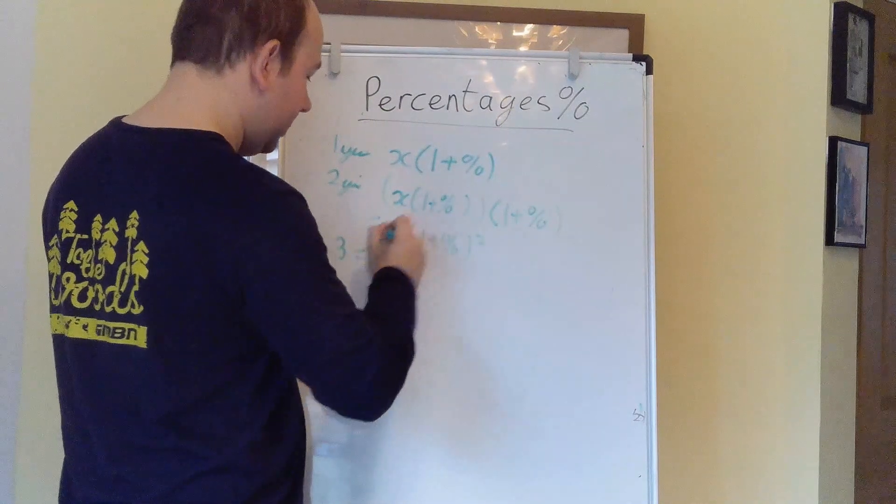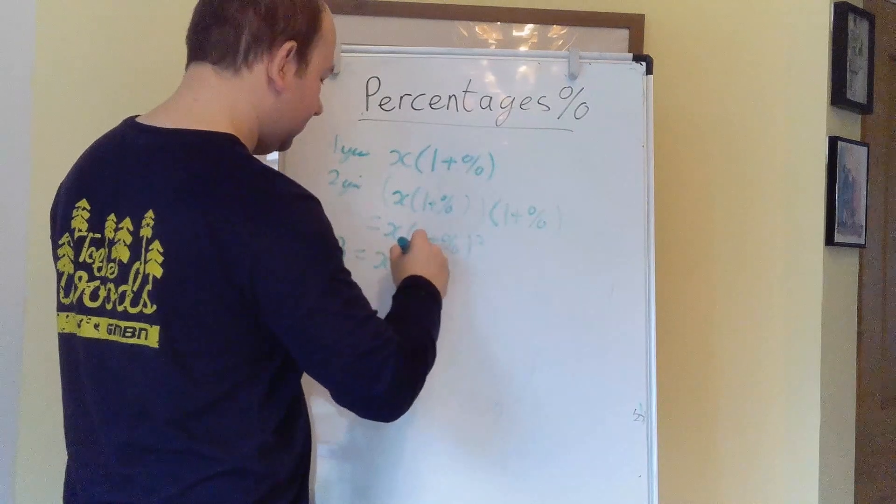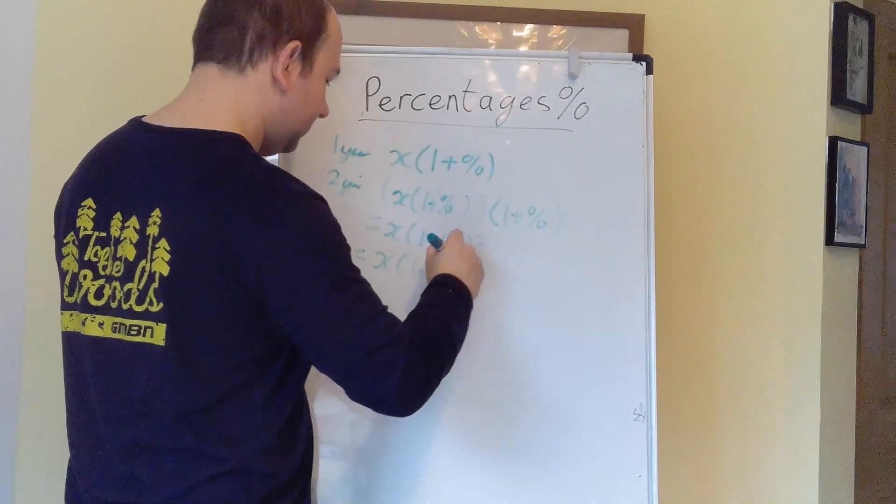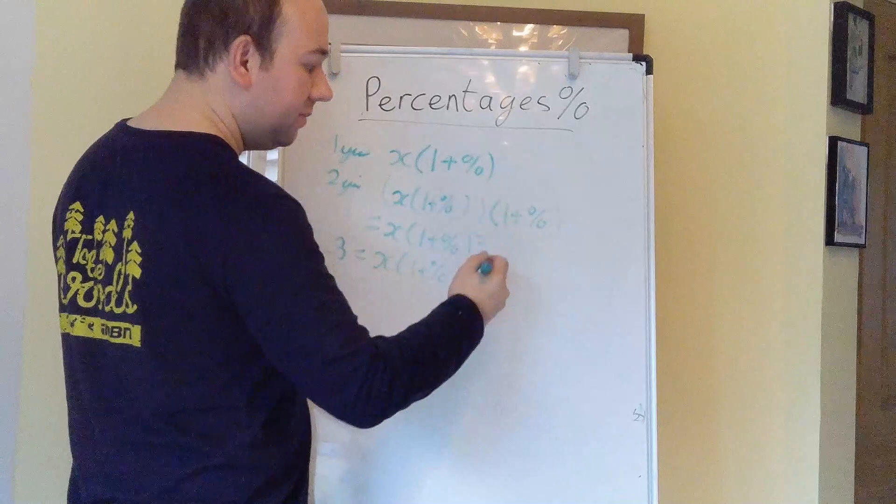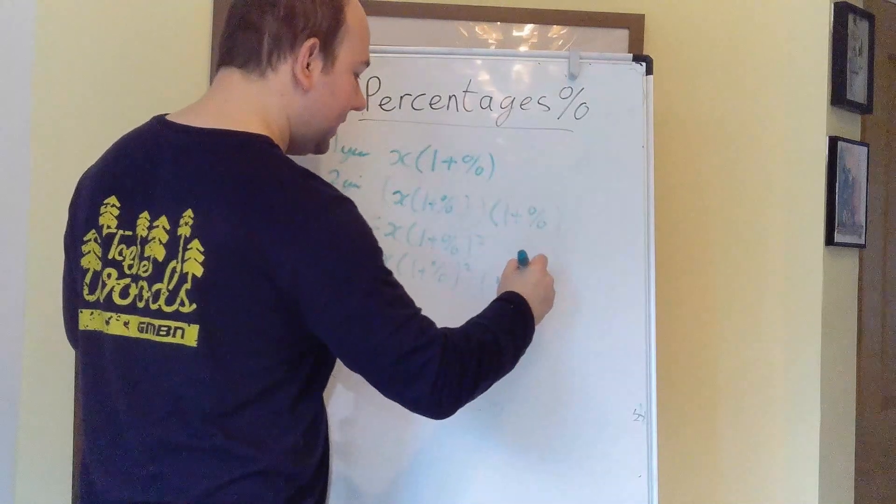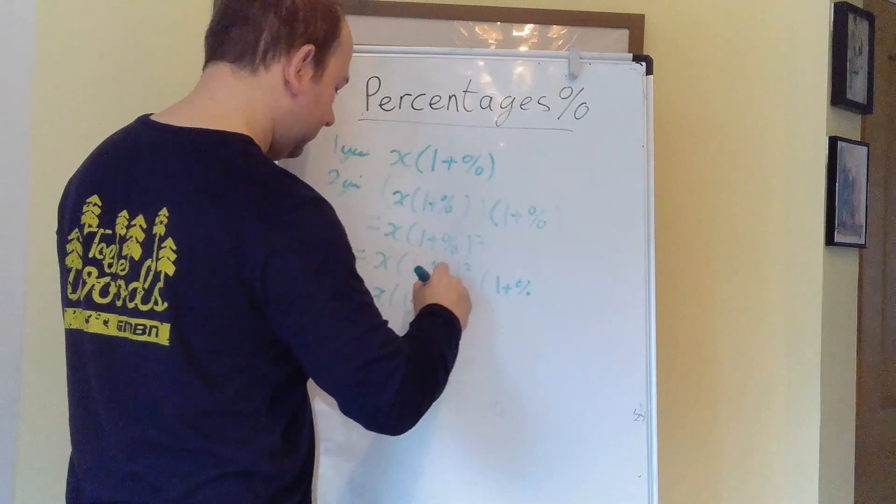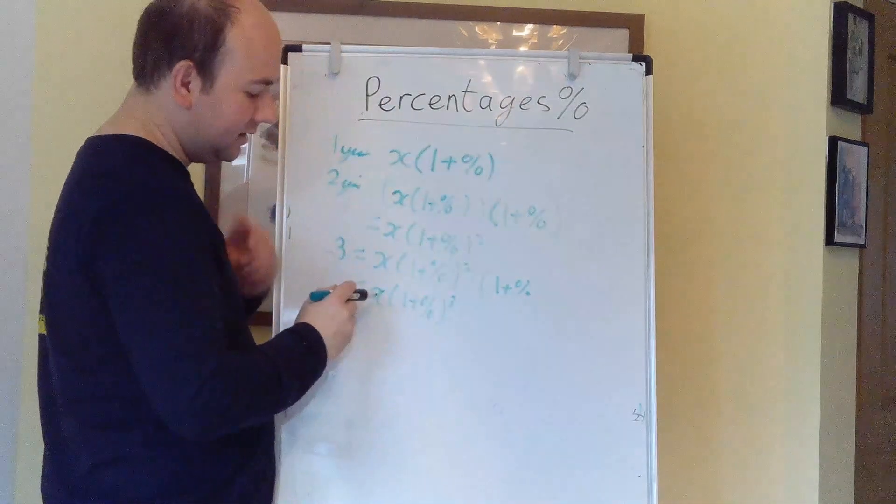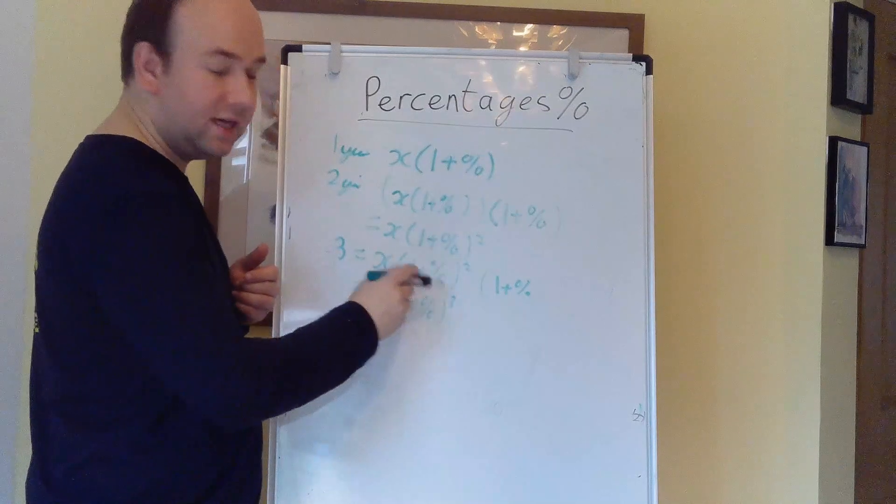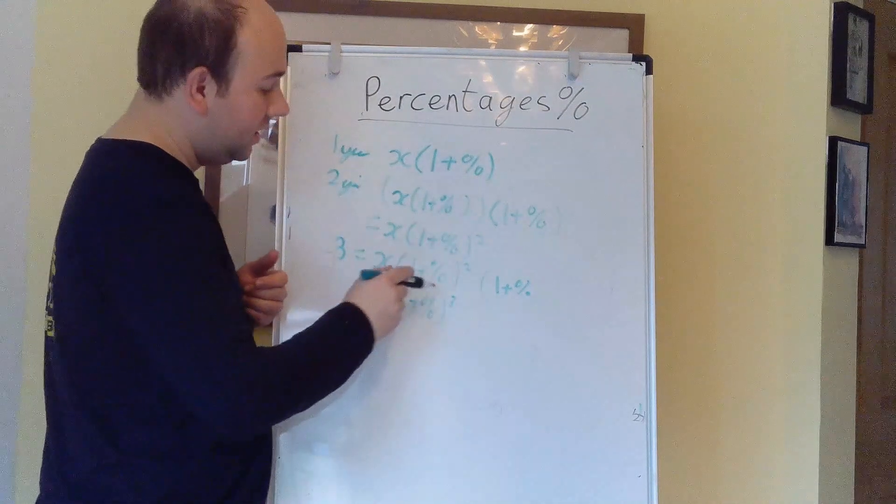After three years, you take this value, and again, you multiply it by 1 plus the percentage, which is the same as x, and then in brackets, 1 plus the percentage cubed. So as you can see, for every year you do, you get your formula.